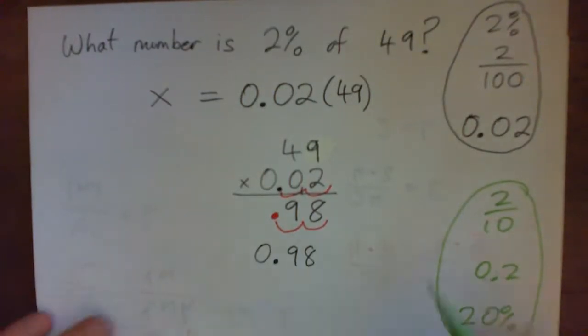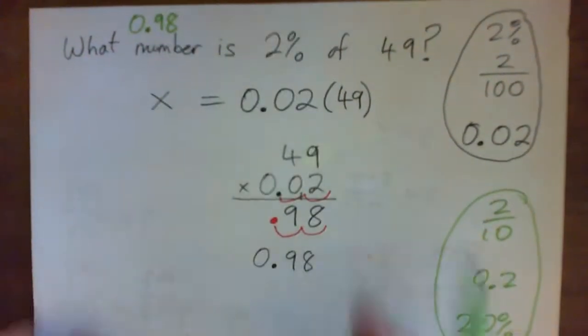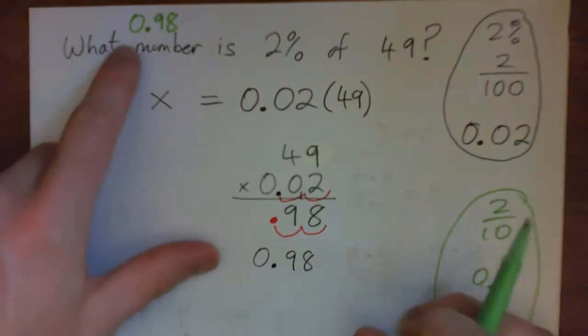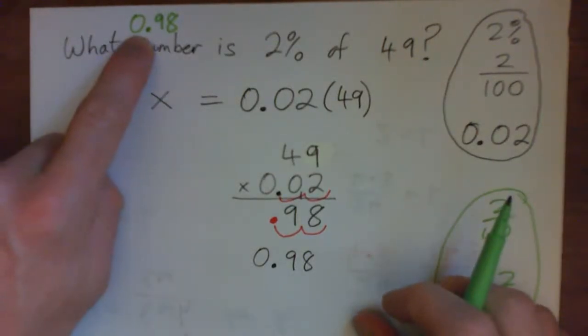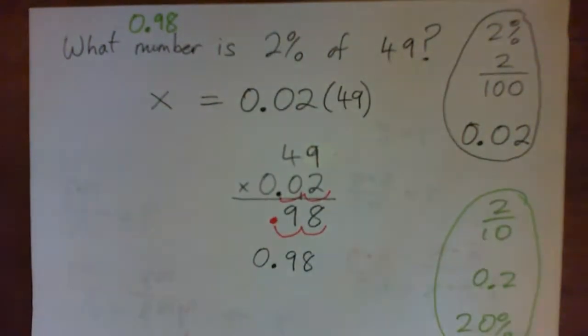Now, write that in and see if that makes sense to you. 0.98. So our number became, so does this make sense? 0.98 is 2% of 49. Does that seem reasonable?